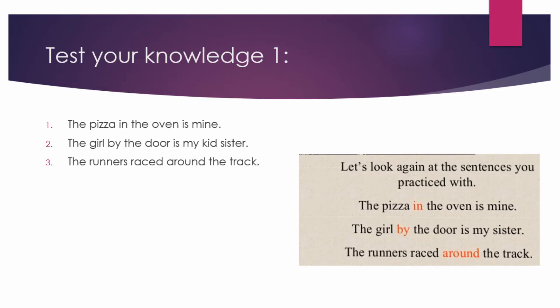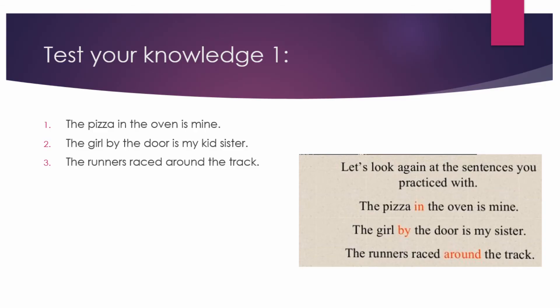Second example: 'The girl by the door is my kid's sister' — what is the preposition? The answer is 'by,' because 'by' comes before the object of the preposition, which is 'door.' Third example: 'The runner raced around the track' — the correct preposition is 'around.' This brings us to the end of Testing Knowledge One.